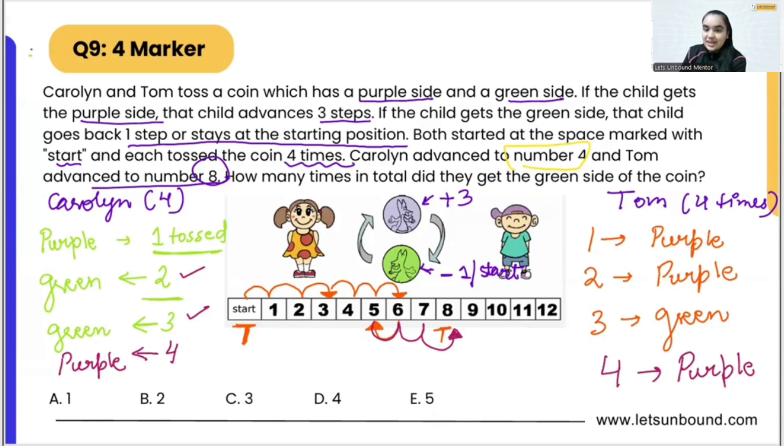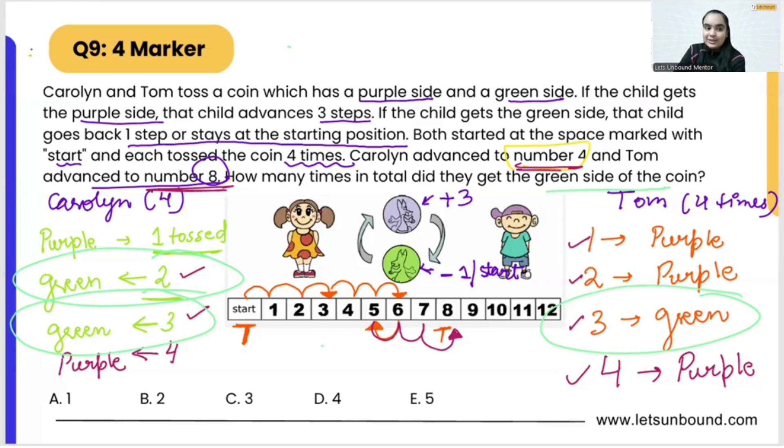Now see, we are done with all the things whatever was provided to us in the question. They both have to toss four times. This is how they are going to follow the track: purple, purple, green, and then purple. From here we can say how many times they got green side of the coin: one, two, and three. So they got the green side of the coin three times all together.